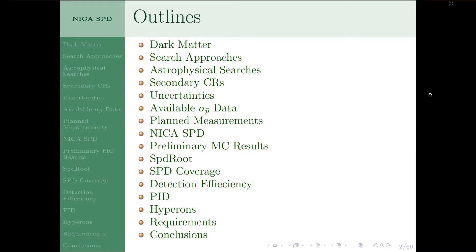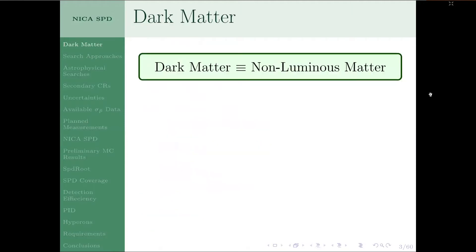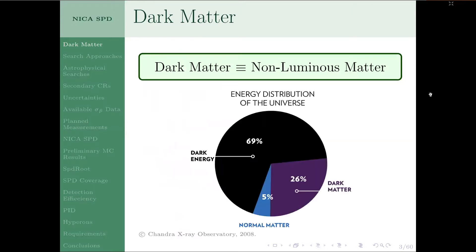To start with dark matter: simply put, dark matter is a form of matter that does not interact electromagnetically, so we can't observe it in the usual ways. It is known to make up about 26% of the total energy budget of the universe — more than five times the ordinary matter contribution.